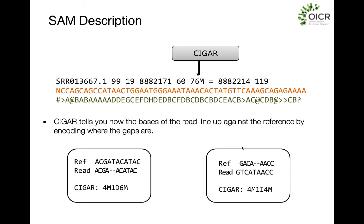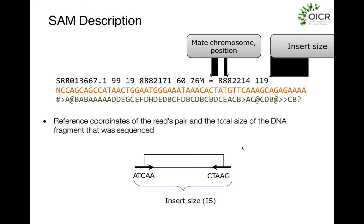An important point about the CIGAR string is that it only records which positions match — it doesn't confirm a perfect match. As you can see in the second example, an A and a T aren't identical, but if the aligner forces them to count as a match, the CIGAR string only encodes that. To get the actual reference sequence, you'd need to pull the reference bases at that position. The final two fields relate to paired-end sequencing: where your pair maps — an equal sign means same chromosome — the position, and then the insert size, which is actually the full template length from end to end.